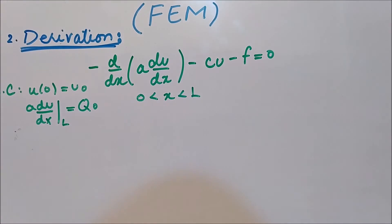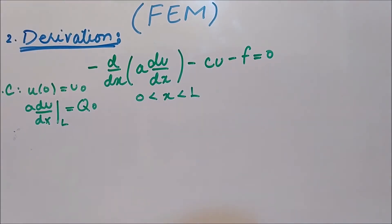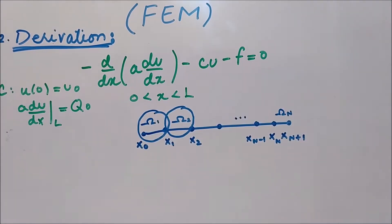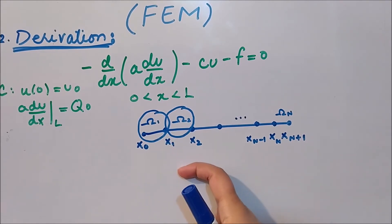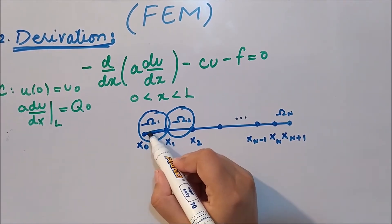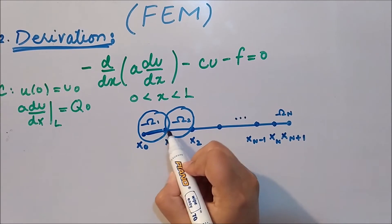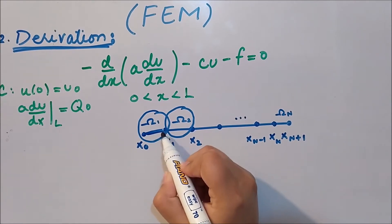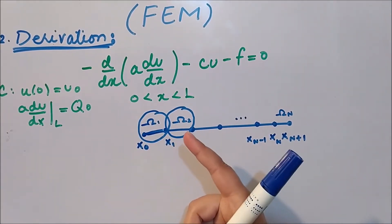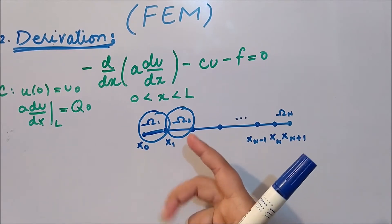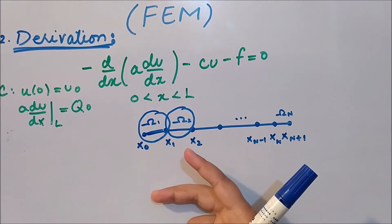In this second step we will apply the Ritz method, also known as the weak form, on each element. For each element we will derive an equation by treating each element individually. We will first figure out what the residual is, and then apply the weighted integral statement.